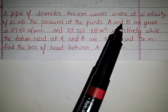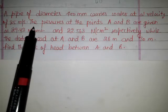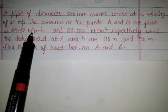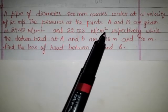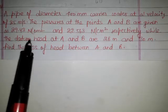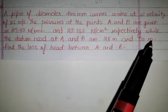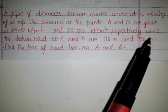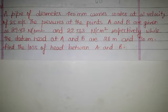The pressures at points A and B are given as 29.43 Newton per centimeter square at point A and 22.563 Newton per centimeter square at point B respectively, while the datum heads at A and B are 28 meters and 30 meters. The distance is varying. Find the loss of head between A and B.